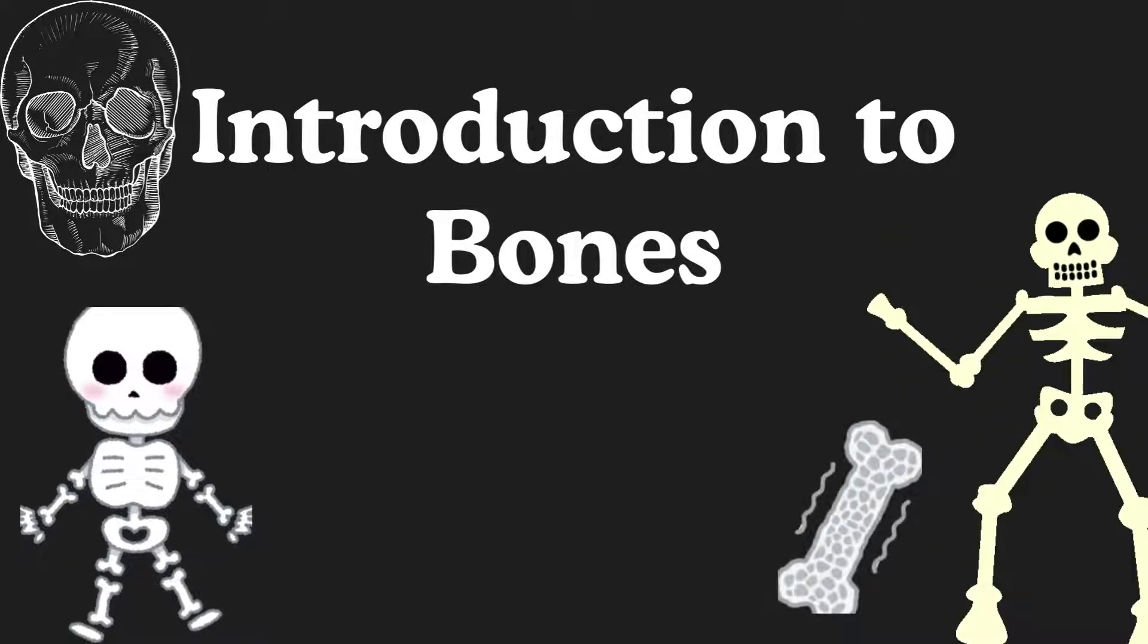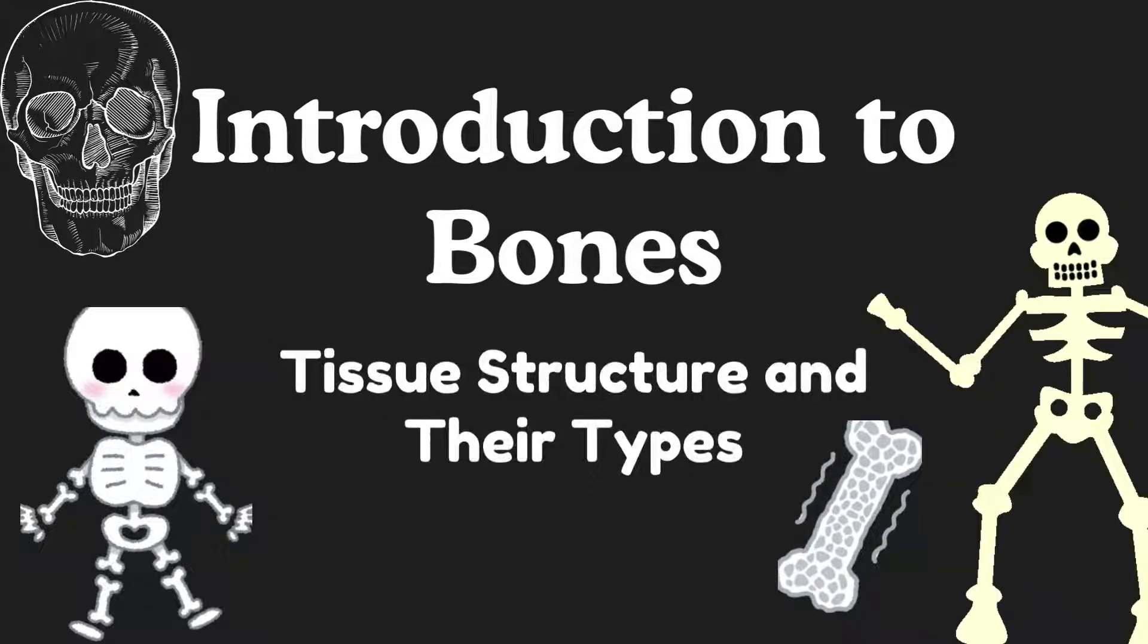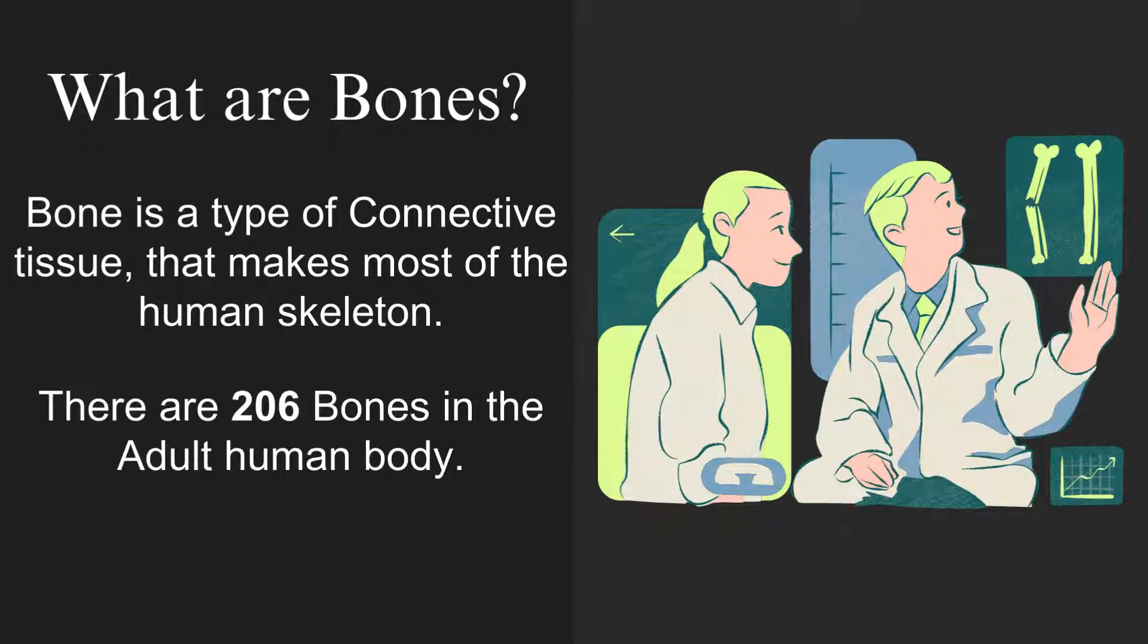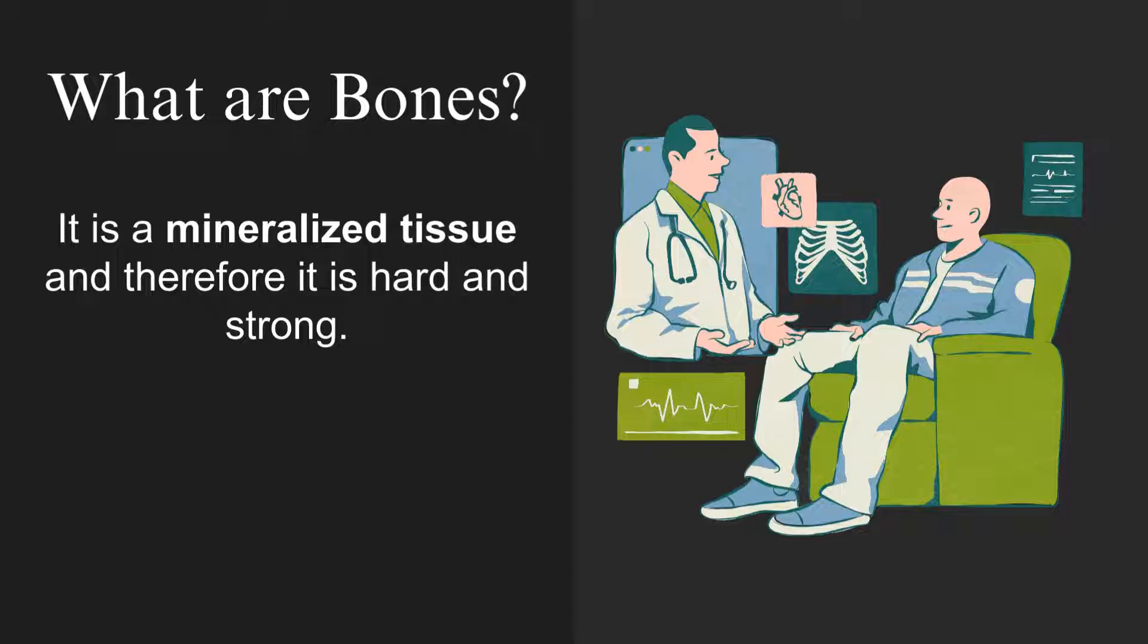In this video, we will talk about introduction to bone tissues, their tissue structures, and their types. What are bones? Bone is a type of connective tissue that makes most of the human skeleton. There are 206 bones in the adult human body. It is a mineralized tissue and therefore it is hard and strong, as it is having calcium, phosphate, and magnesium.